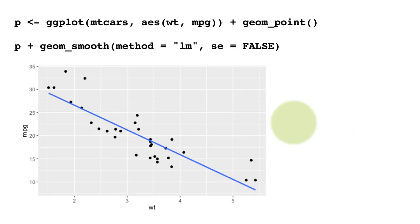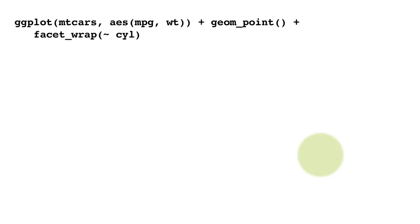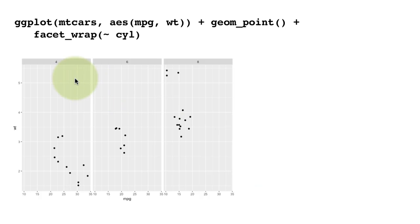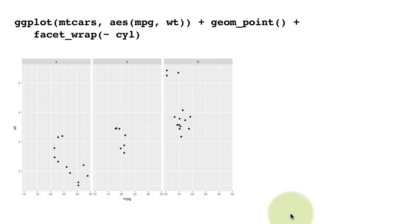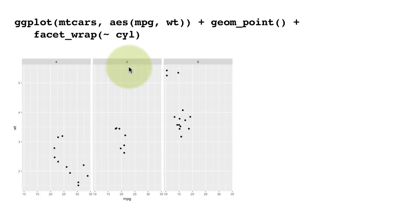Thus far we have looked at drawing single or multiple lines on single plots. Now we'll look at how to extend this idea to facets. We plot the scatter plot faceted by the number of cylinders — four, six, eight — showing miles per gallon against weight. The goal is to plot a horizontal line in each facet at the mean weight for cars with that cylinder count.